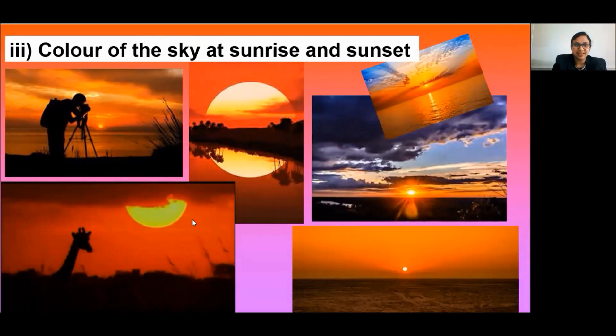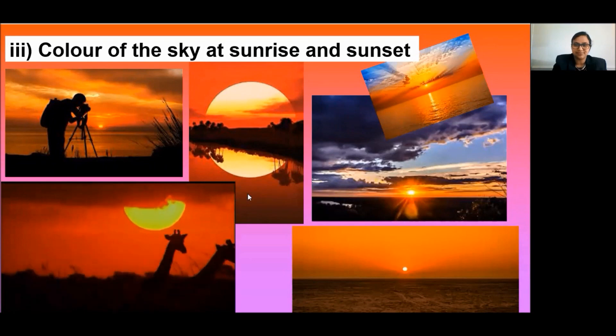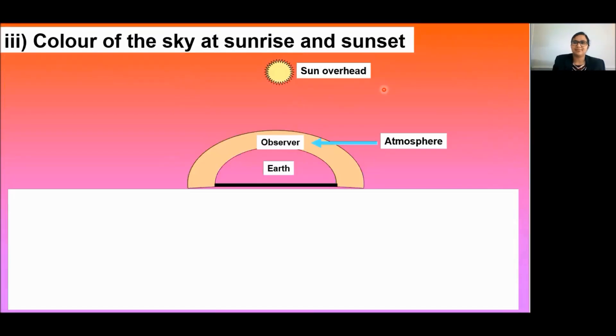Next is color of the sky at sunrise and sunset. At noon, light from the sun overhead would travel relatively shorter distance. So the sun appears white as only a little of violet and blue colors are scattered.